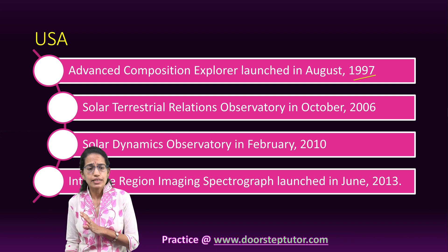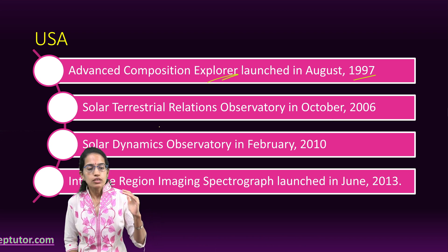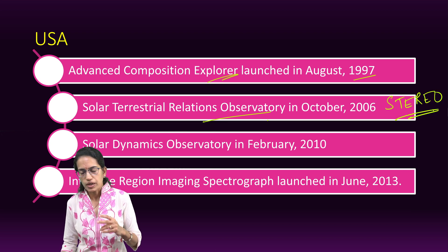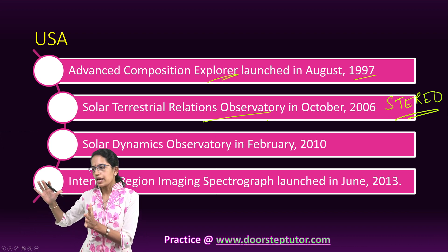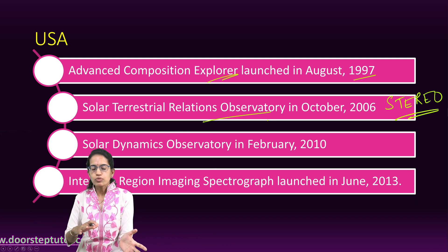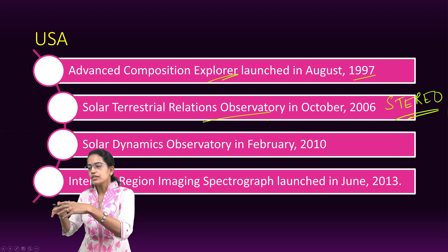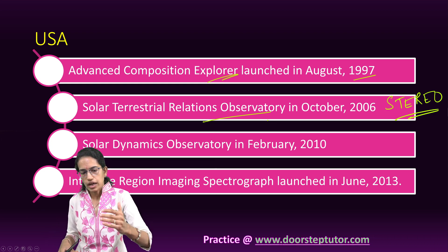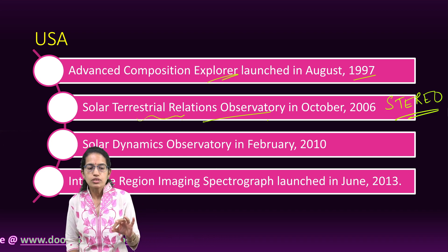In 1997, the Advanced Composition Explorer went. Then, a very important mission was the Solar Terrestrial Relations Observatory, named STEREO. STEREO was in two parts — STEREO A and STEREO B — which trace the flow of energy. STEREO B actually lost its connection, but the connection with STEREO A is still maintained. Through this, the Earth-sun relationship is studied via two observatories: one ahead of the Earth in orbit and the other trailing behind it.